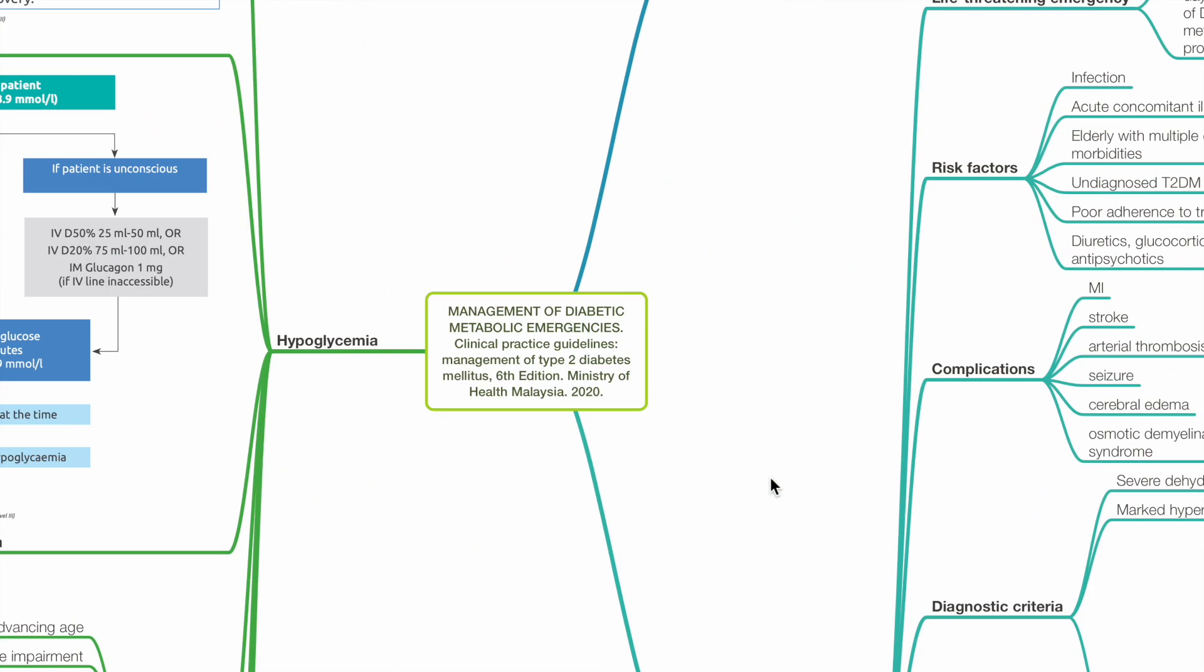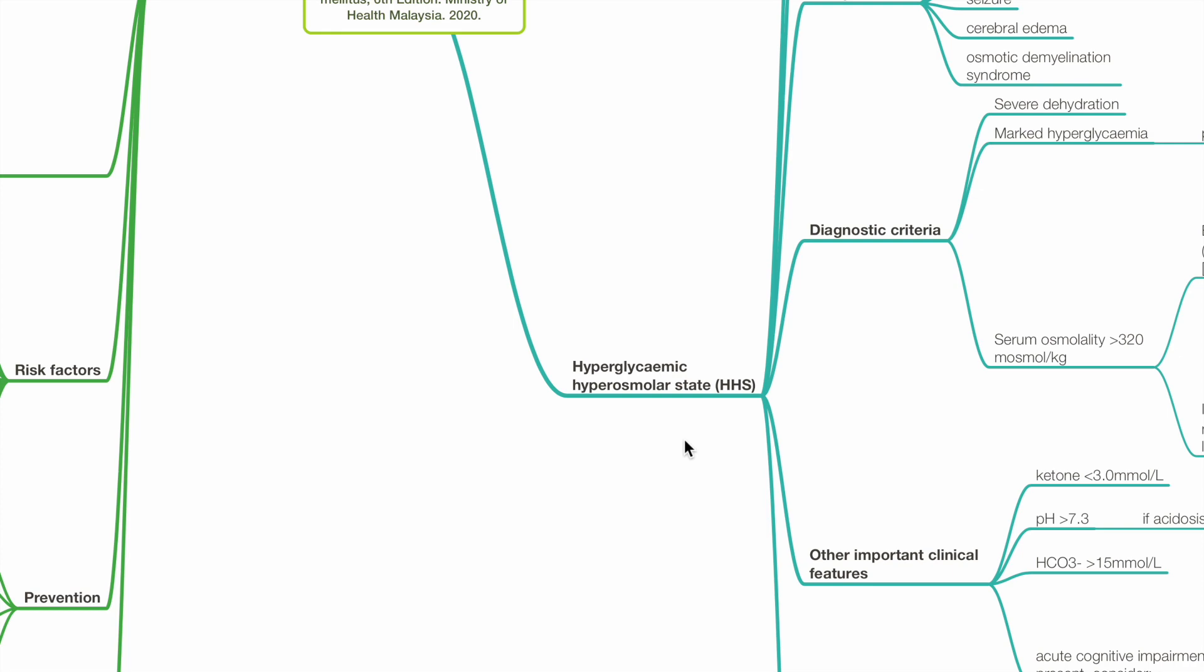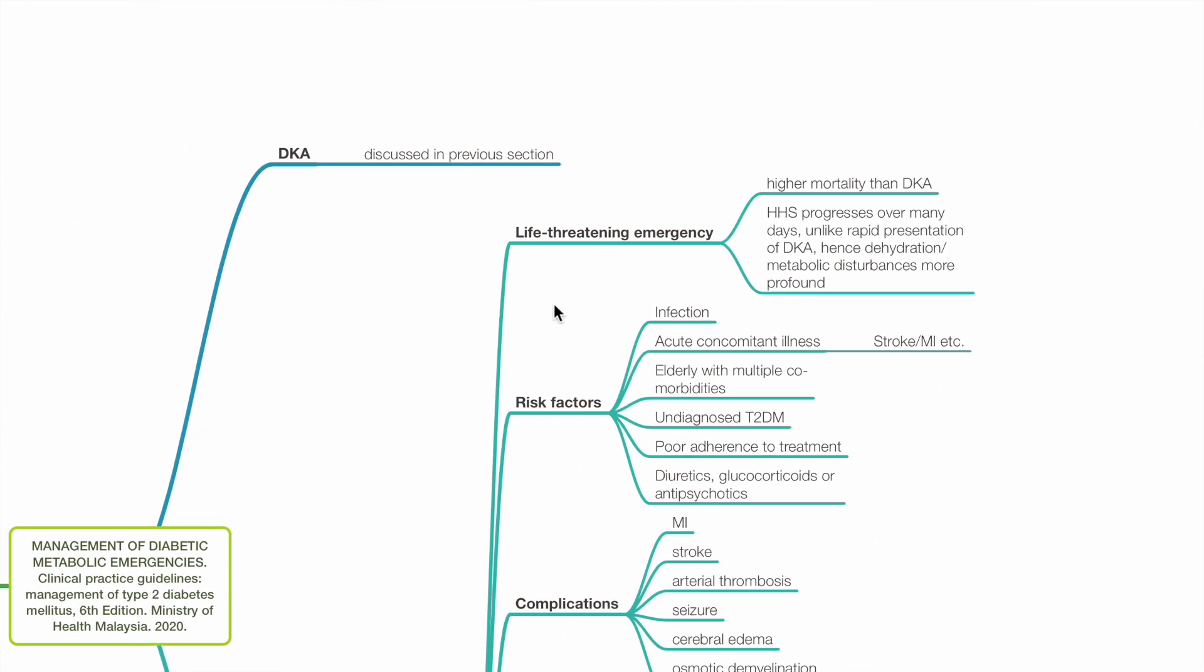Management of other diabetic metabolic emergencies. Hyperglycemic hyperosmolar state, HHS. This is a life-threatening emergency with higher mortality than DKA. HHS progresses over many days, unlike the rapid presentation of DKA. Hence dehydration and metabolic disturbances are more profound.